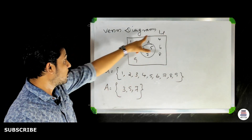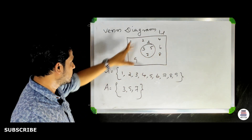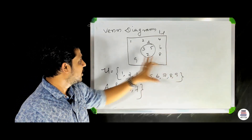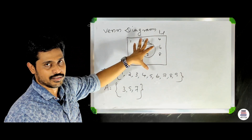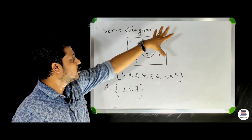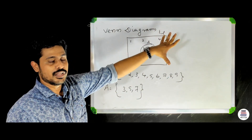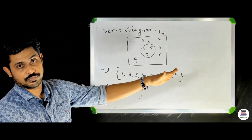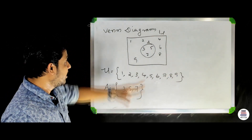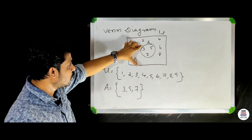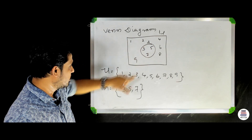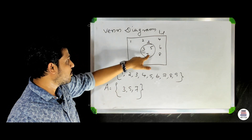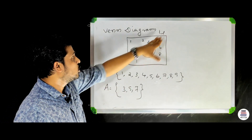The universal set U is represented by a rectangle. For example, U contains the numbers 1, 2, 3, 4, 5, 6, 7, 8, 9. The numbers inside represent the elements. A member that is a subset of A is shown inside a circle within the rectangle.